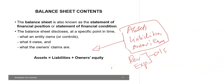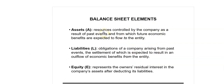The Balance Sheet shows what an entity owns or controls — the assets of the business — what it owes, i.e. liabilities, and what the owners' claims are at a specific point in time, represented by the accounting equation. Assets represent resources the entity controls as a result of past events, from which it expects to receive future economic benefit. If an asset provides economic benefit over less than one year, it is classified as a current asset; if over more than one year, it is classified as a non-current asset.